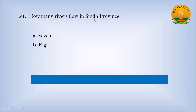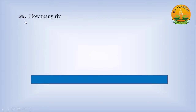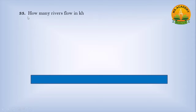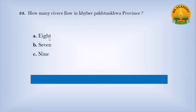How many rivers flow in Sindh province? Option A seven, option B eight, option C four — answer is C, four. How many rivers flow in Balochistan province? Option A seven, option B eight, option C nine — correct answer is A, eight.